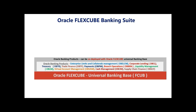These standalone Oracle Banking products include, for example, Enterprise Limits and Collaterals, Corporate Lending, and OVCL to take care of money market, foreign exchange, all treasury operations, treasury bills, securities, derivatives, options, etc.